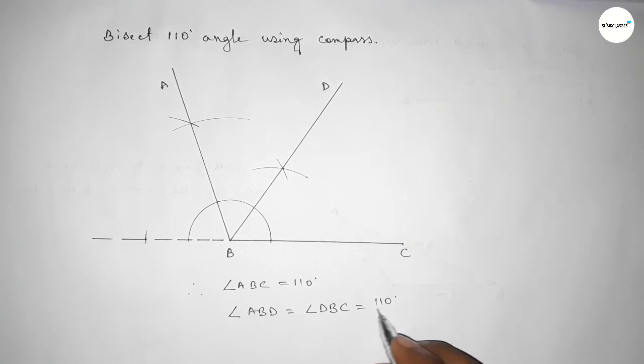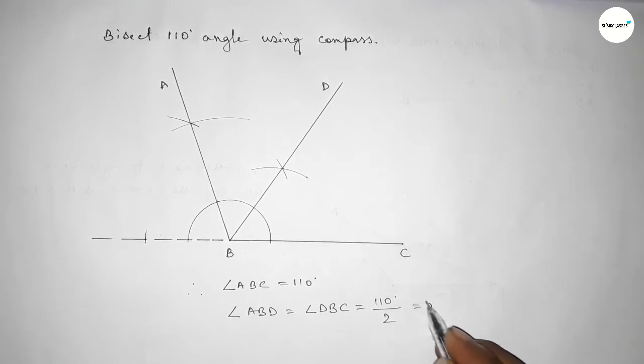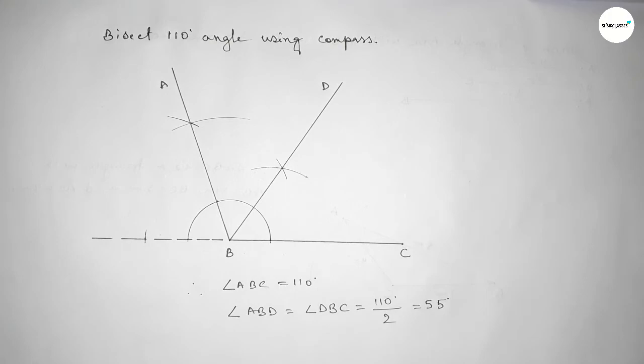Angle ABD equals angle DBC equals 110 degrees divided by 2, which is 55 degrees each. That's all — thanks for watching. If this video is helpful to you, please share it.